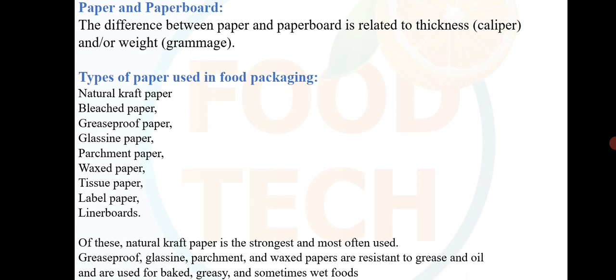The difference between paper and paperboard is related to thickness, caliper and/or weight (grammage). Types of paper used in food packaging include: natural kraft paper, bleached paper, greaseproof paper, glassine paper, parchment paper, waxed paper, tissue paper, label paper and liner boards. Of these, natural kraft paper is the strongest and most often used. Greaseproof, glassine, parchment and wax papers are resistant to grease and oil and are used for baked, greasy and sometimes wet foods.